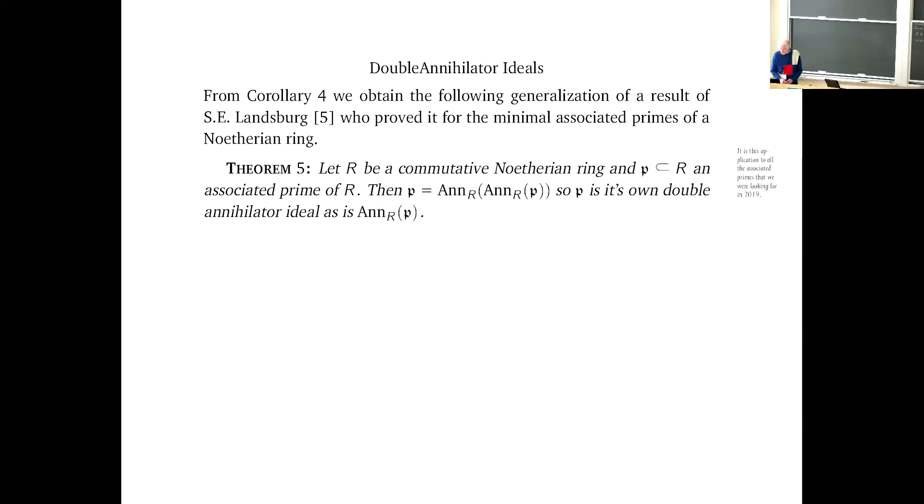When Junzo and Chris were in Göttingen, we discovered by internet search a paper of a guy by the name of Landsberg, S.F. Landsberg, who proves this for, we think, we think he proves this for the minimal prime ideals of a ring R. So if P is an associated prime which happens to be minimal, we think Landsberg proved this double annihilator result. And here the result is if you have a commutative Noetherian ring and P is an associated prime of R, meaning it's the annihilator ideal of an element, so the annihilator ideal of a principal ideal, then P is its own double annihilator. That's the explanation of the title for the talk.